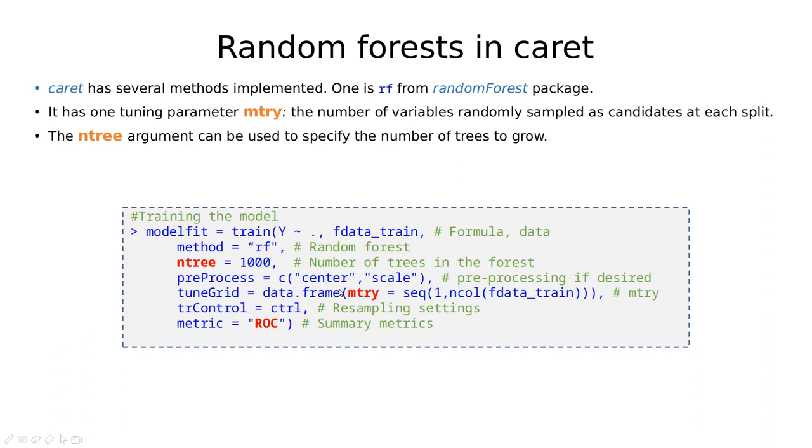We have to play with the optimal value of m. We can use cross-validation to find this one. In cross-validation, we're going to sequence from one to the number of rows, which is p in the discussion before. We can use different sequences, different metrics. For instance, we can use accuracy, we can use kappa, or we can use the area under the curve of the ROC curve.